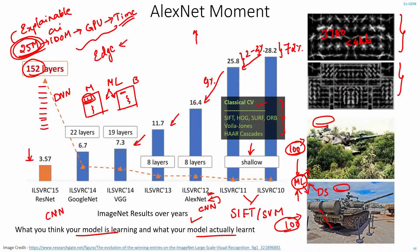Sometimes there can be a difference between what you think your model is learning and what it actually learned. You should be aware of this and try to understand what your network is learning. We don't see this problem as much with classical computer vision techniques, because the layers are so few and small that it's easy to understand — moreover, we have engineered those layers and know the mathematics and the kind of features they extract.